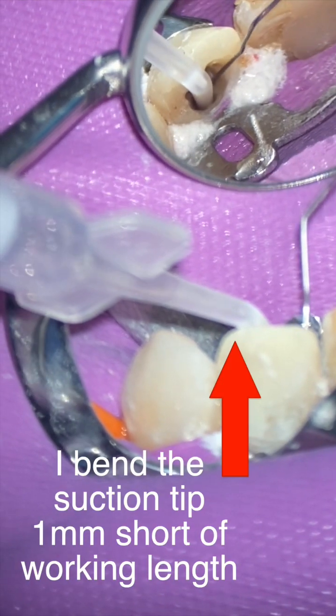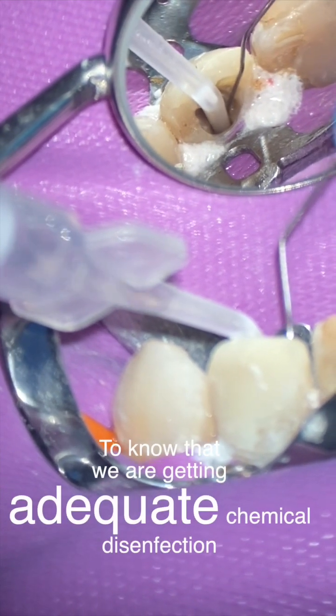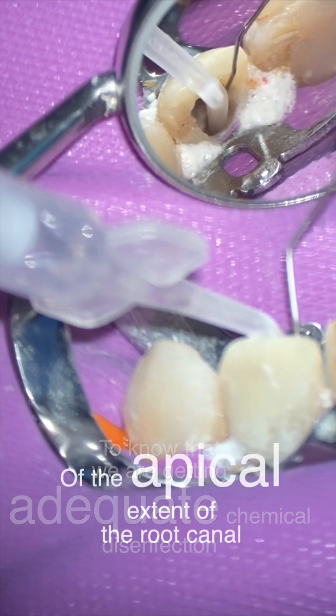So I'll bend my suction tip to exactly one millimeter short of my working length, and that way I know I'm getting adequate chemical disinfection of that apical extent of the root canal.